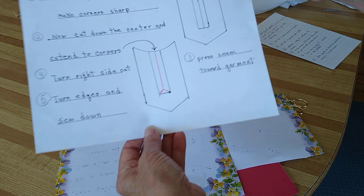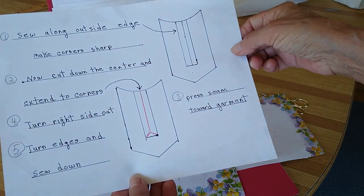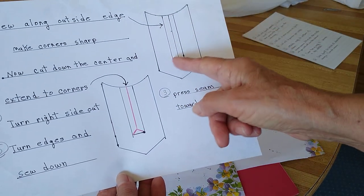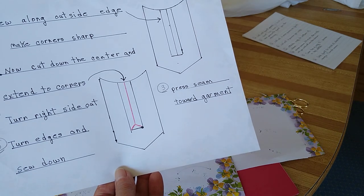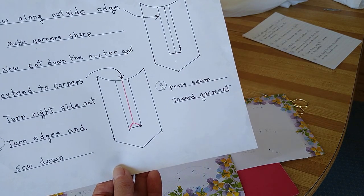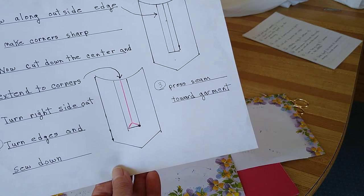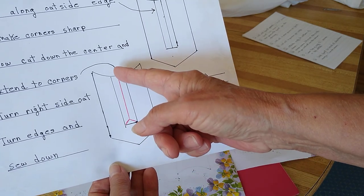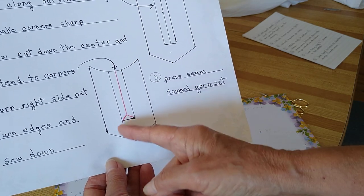Then you're going to sew along those outside lines, come down, turn, and go up sharp corners. You're going to clip it down the center and come to the corners.